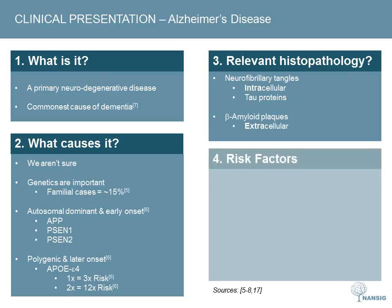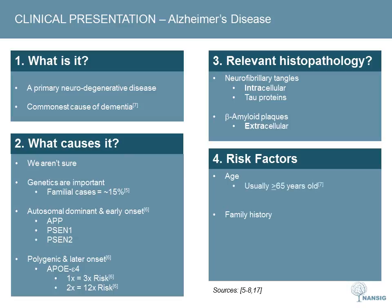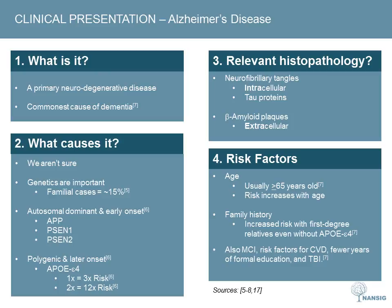Key risk factors for Alzheimer's disease are age and family history. Most patients are over 65 when diagnosed and risk increases with age. A first degree relative with Alzheimer's disease increases risk even when APOE inheritance is factored out. Additional risk factors include mild cognitive impairment, cardiovascular disease risk factors, fewer years of formal education, and previous traumatic brain injury. Down syndrome has a very strong link to Alzheimer's — more than 75% of patients with Down syndrome aged over 65 have Alzheimer's disease, likely due to a third copy of the APP gene on chromosome 21.